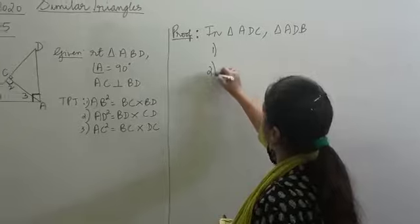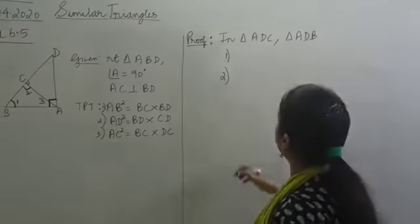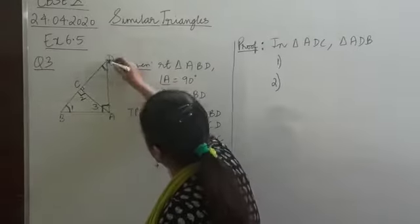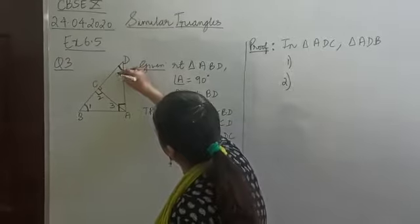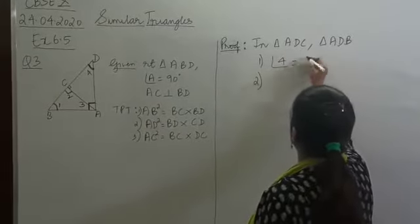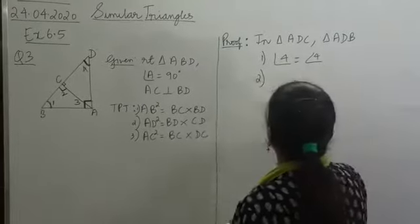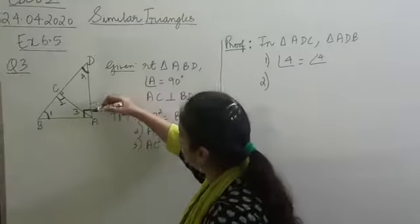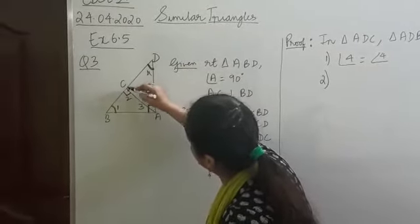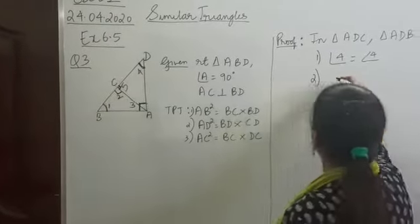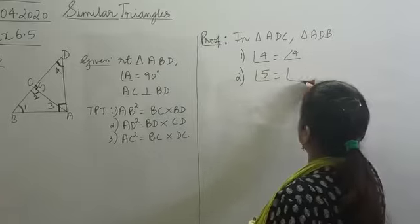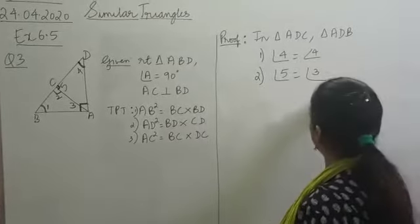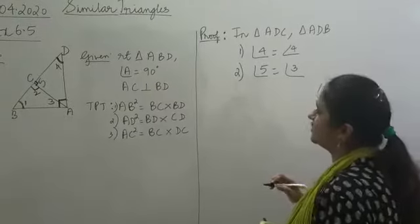Now we show that these two triangles are similar to each other. Vertex D is common to both triangles ADC and ADB — this is a common angle, let's number it 4. So angle 4 equals angle 4. Also, in triangle ADC, vertex C contains the right angle — we call it angle 5. Angle 5 in the small triangle equals angle 3 of the big triangle, both equal to 90 degrees. Again, by the AA similarity criterion, these two triangles are similar.